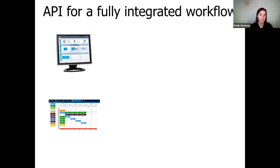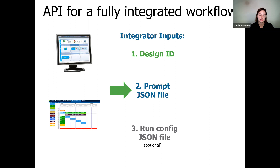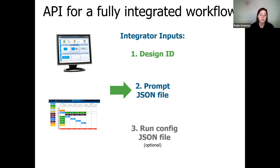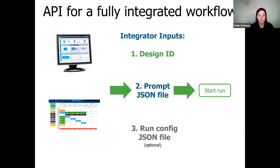No matter what you're using the API for, it works the same way. Using whatever your automation control software of choice is, experiments can be started with just a few inputs from your operator. These inputs include a design ID — that number coming from Library Studio after you've designed your experiment — plus a couple of JSON files. One fills out the prompts that the design might have. If you've used Design Creator, that's all the inputs you need. If you've used Library Studio only, there'll be an additional JSON file to provide extra information. Once you've provided these three things, the API is ready to start the run.